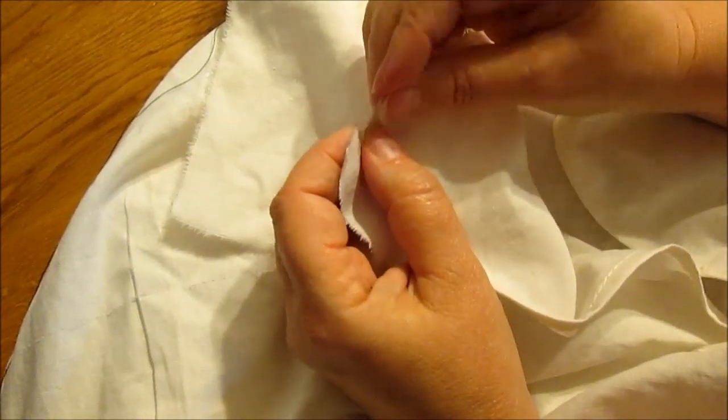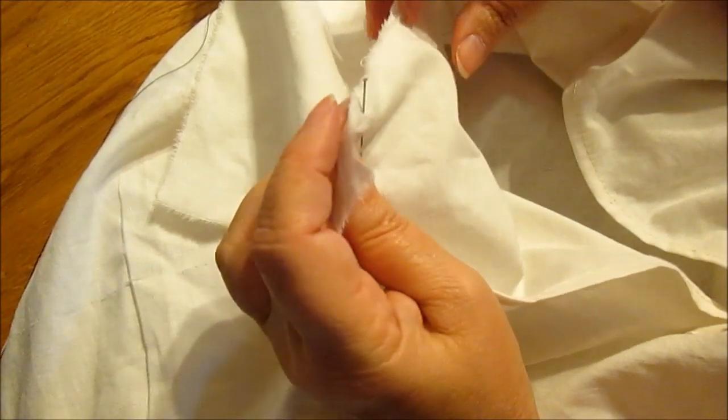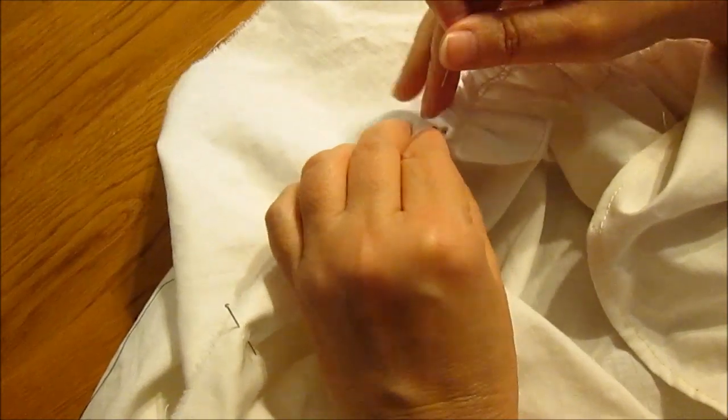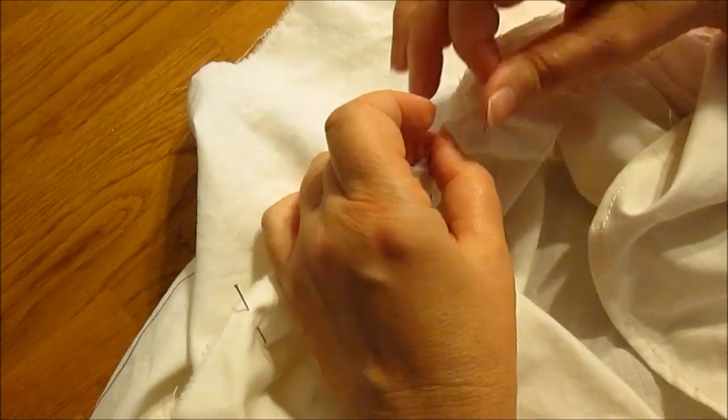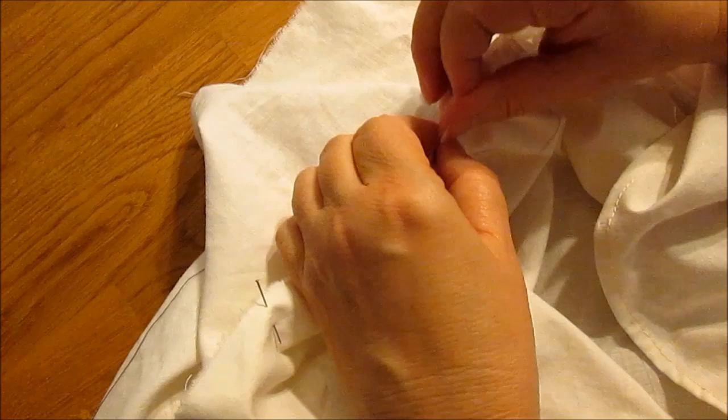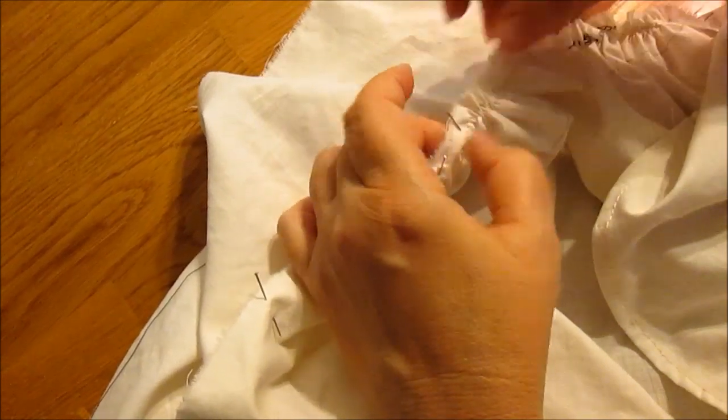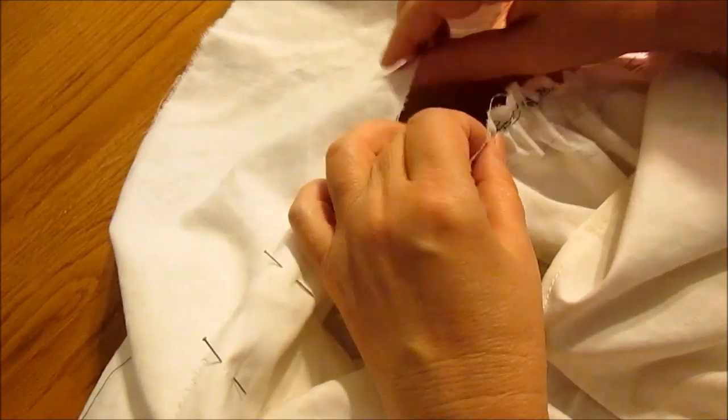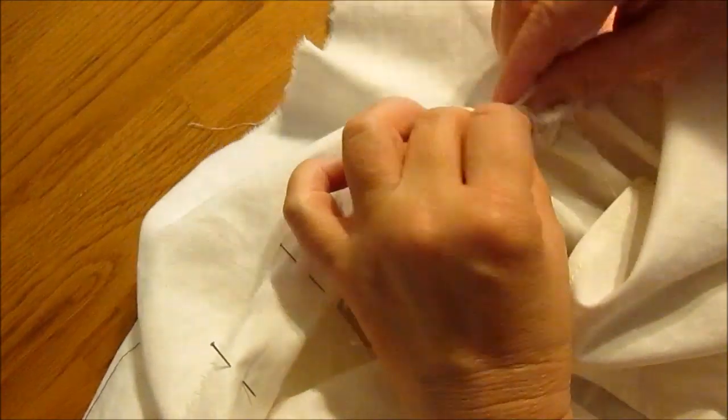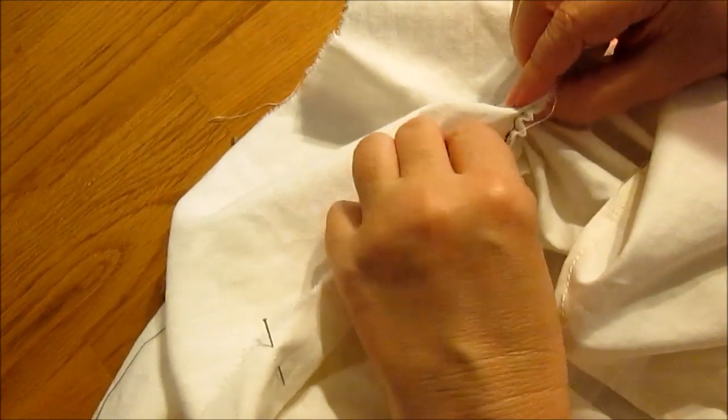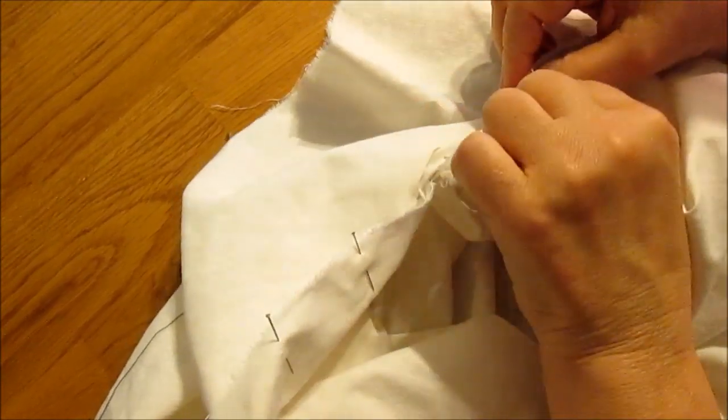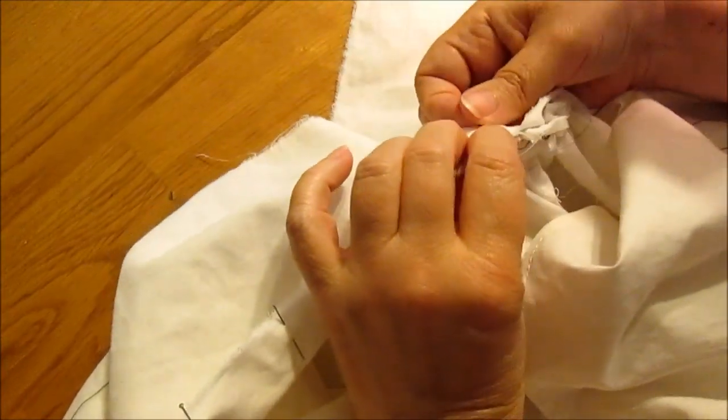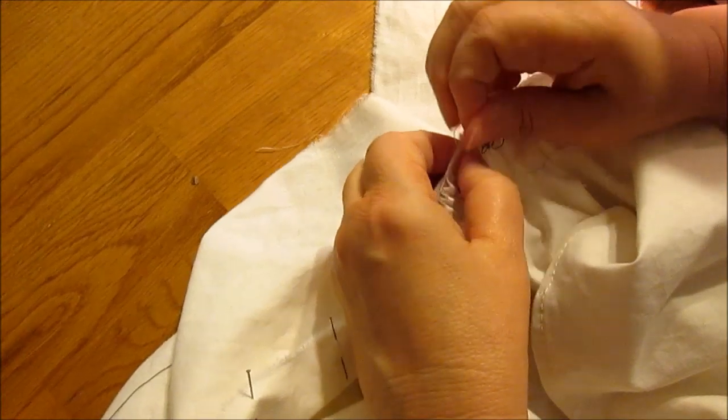And I will start pinning. Going around the corner where the shoulder is attached is going to be just a little bit tricky, but you can lay it down and do it. Okay, now here's center back on the collar. Here's center back on the shirt. We are going to make sure that those match. Attach them together.